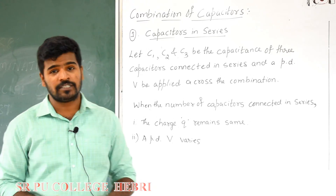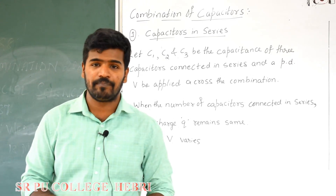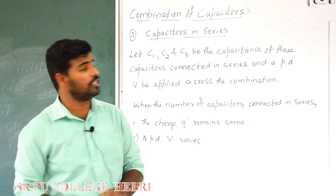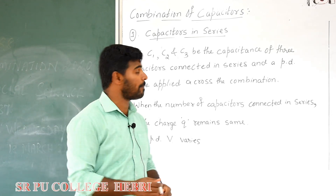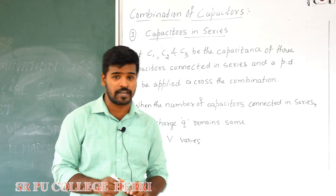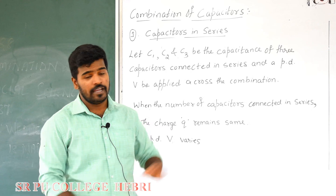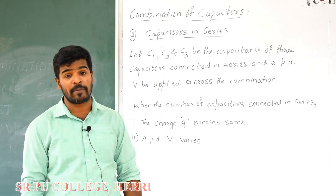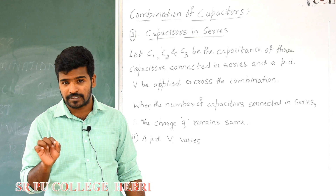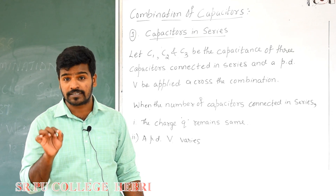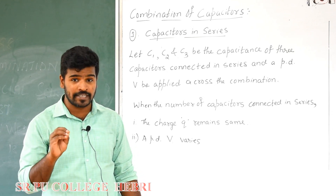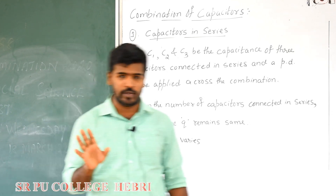Combination of capacitors. In general, there are two types of combination: the first one is capacitors in series, and the second one is capacitors in parallel. We are now discussing the first one — capacitors in series. Capacitors are said to be in series if they are connected end to end.